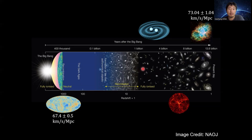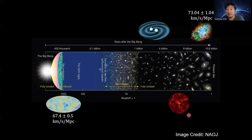In order to understand where the Hubble tension comes from, we have developed other methods. For example, at intermediate redshifts, we use the Baryon Acoustic Oscillation scale in large-scale structures as a standard ruler to measure the Hubble parameter. Also, since the first detection of gravitational waves, gravitational waves from binary black holes can serve as standard sirens to help us measure the Hubble parameter.